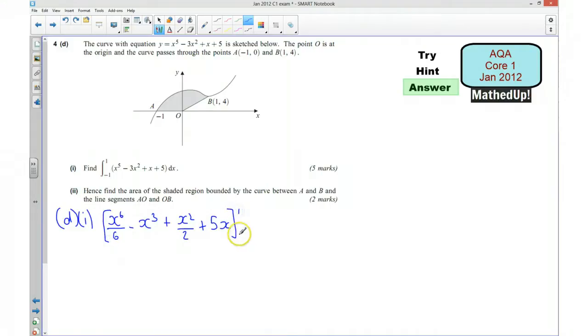So put in 1 and -1. That's going to be equal to, I'll start by putting 1 into this function, so that's going to be 1/6 - 1 + 1/2 + 5. We're going to take away the result of putting -1 into here. So that's going to be -1 to the power of 6 is just 1, so that's 1/6 again. -1 to the power of 3 will be -1 but we're taking away that -1 so it'll be plus 1. -1 squared will be 1 so that's 1/2, and then that's 5 times -1 so that's take away 5.